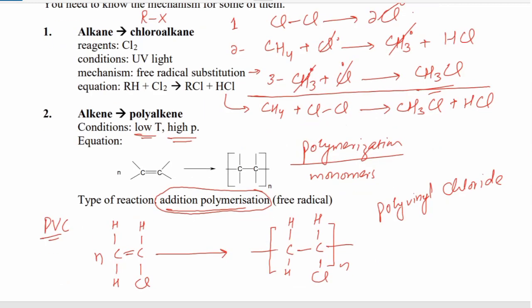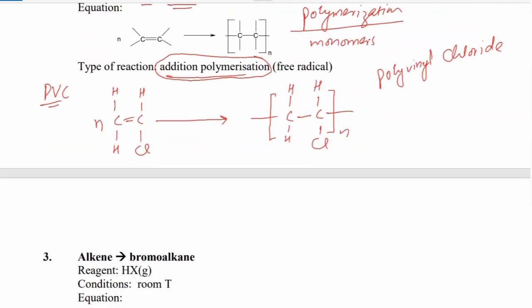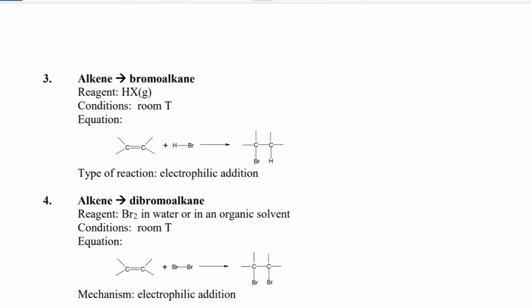Alkene can also convert into bromoalkanes by electrophilic addition. An electrophile is an electron-loving species — electro means electron and phile means loving — because it has a deficiency of electrons. You can see that HBr has a partial positive charge and partial negative charge, so due to electron deficiency it will attack the alkene.